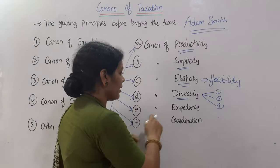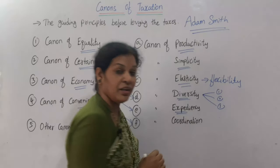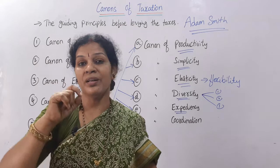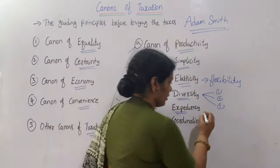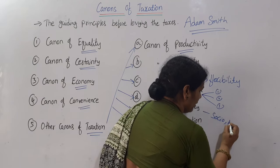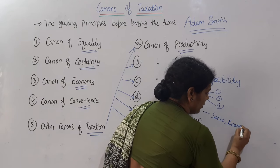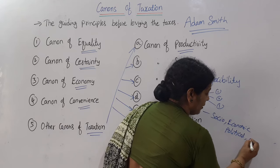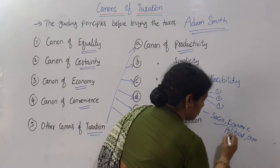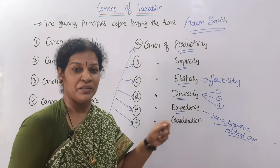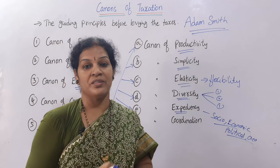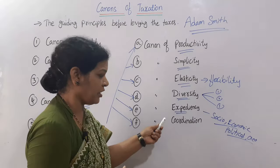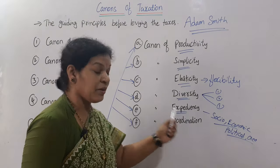The next canon is the canon of expediency. This says that when you are framing the tax policy, you must consider all kinds of factors — especially socio-economic, political, and geographical factors. You cannot blindly lay taxes all the time without considering these factors. The canon of expediency requires that policy be framed thoughtfully according to the prevailing conditions.